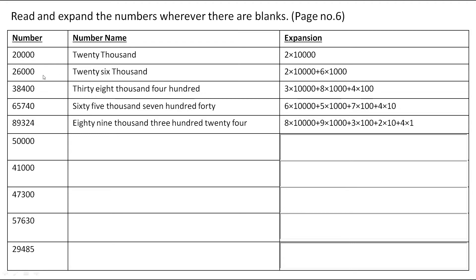Next comes 26,000. The name of this number is twenty-six thousand. The expansion is 2 × 10,000 + 6 × 1,000. 2 is on the 10,000 place, so it is multiplied with 10,000. Then 6 is on the 1,000 place, so 6 is multiplied with 1,000.